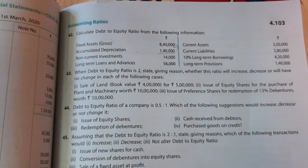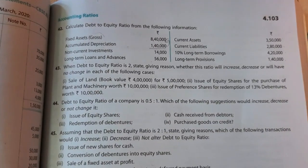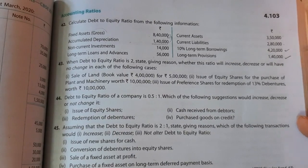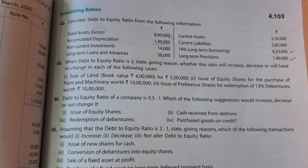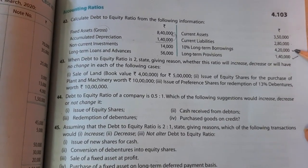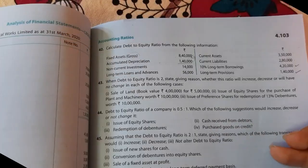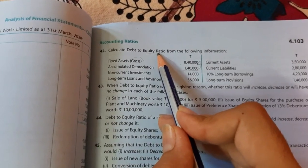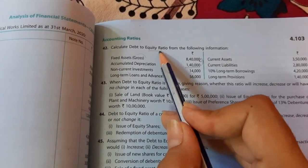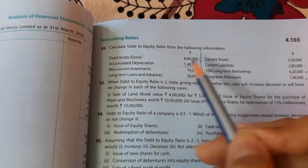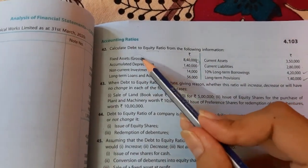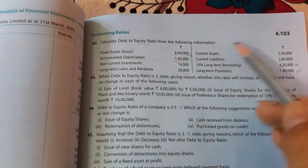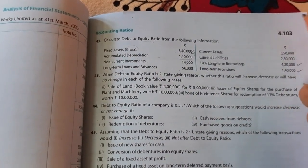To find equity, we first find total assets since all asset items are given: fixed assets, non-current investments, long-term loans and advances, and current assets. Total assets = (8,40,000 − 1,40,000) + 14,000 + 56,000 + 3,50,000 = 11,20,000.